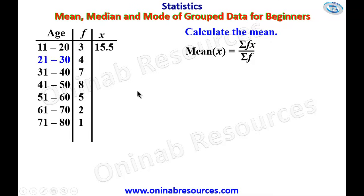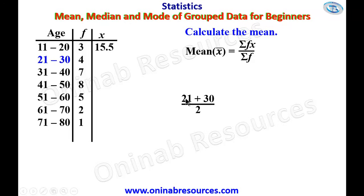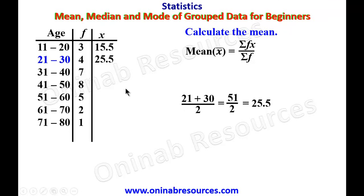We go to the next class interval, which is 21 to 30. We add 21 plus 30, divided by 2. 21 plus 30 gives 51, divided by 2 gives 25.5. Therefore the mid-value for that class interval is 25.5.